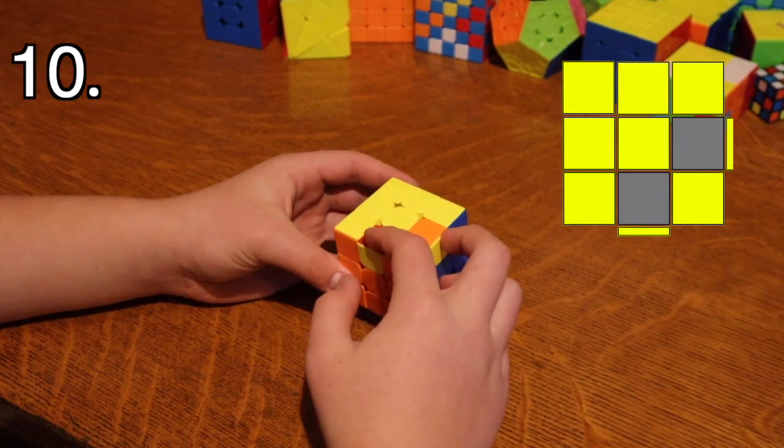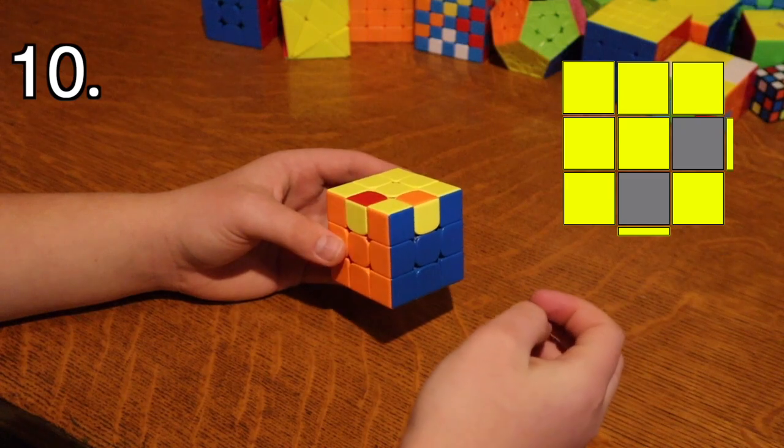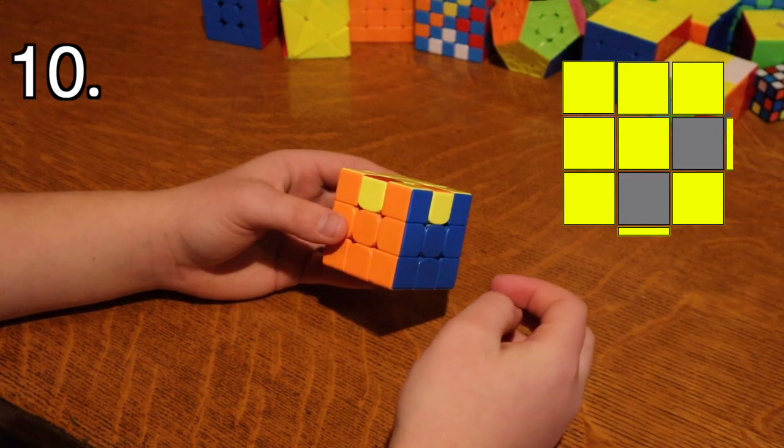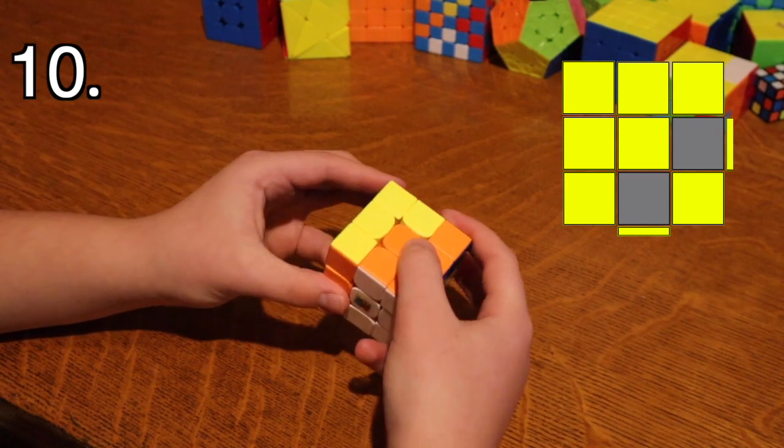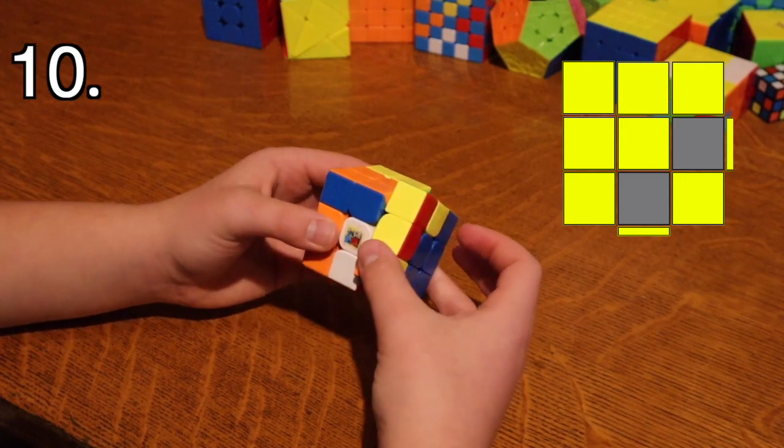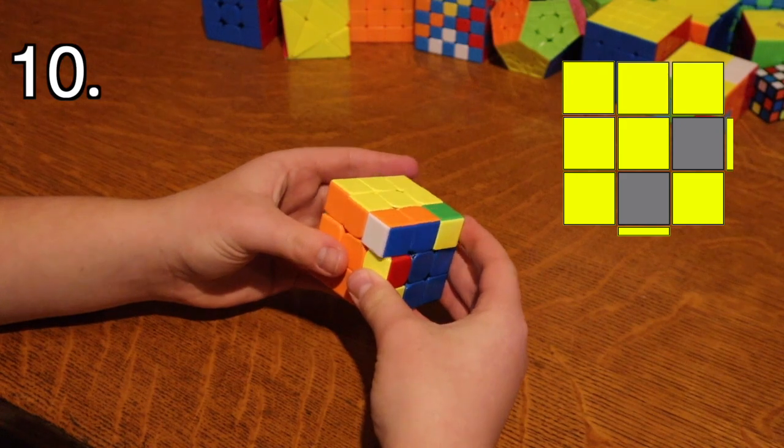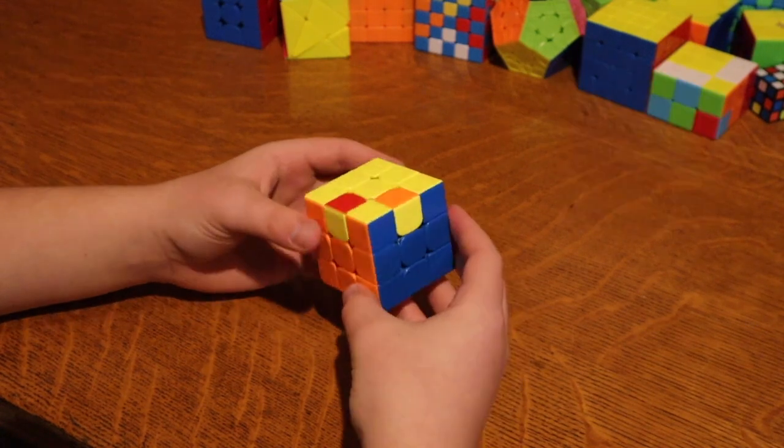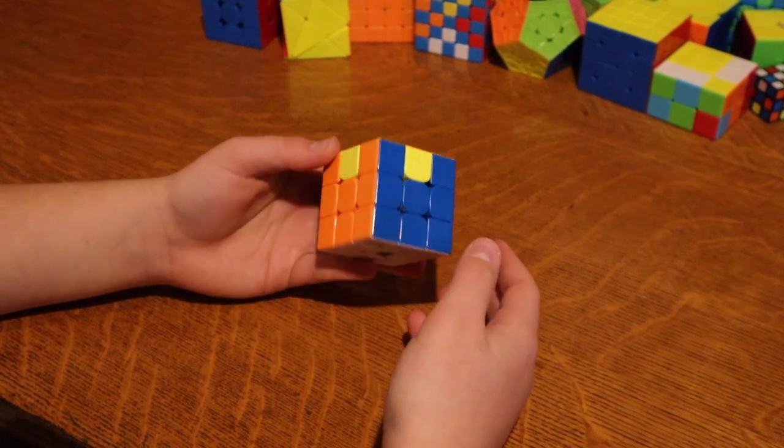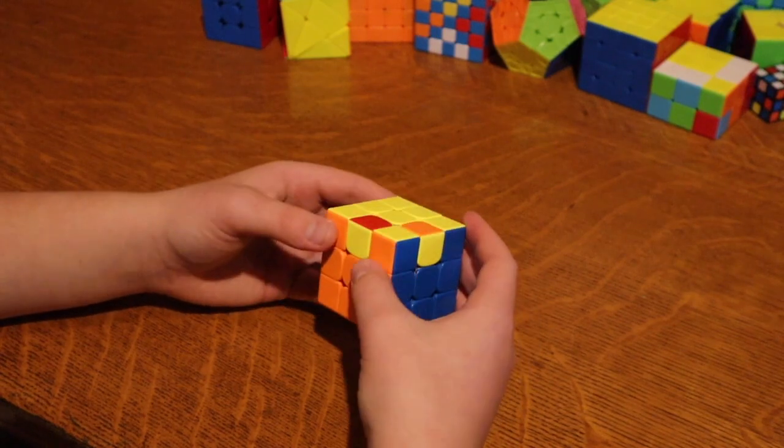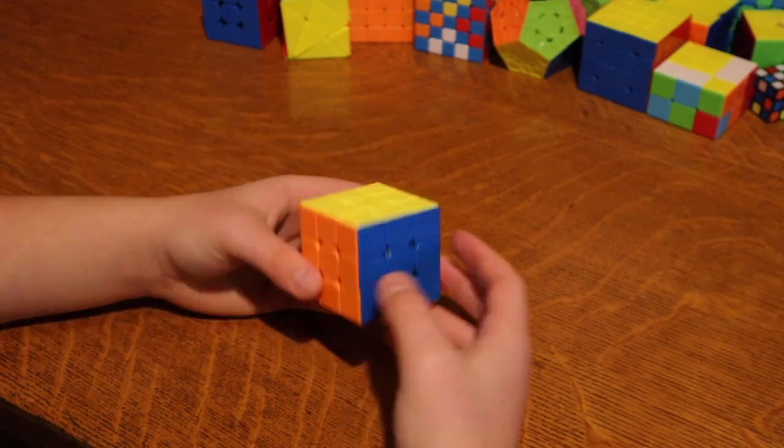And the other case looks like this. It's a little bit less intuitive. It's actually just the same thing, but backwards, but it's kind of harder to do for some reason. But it's just a sexy move with an R wide at the start. And then you do M, and then a reverse sexy move normally. I think the reason it seems harder to me is because of the finger tricks for it. It kind of makes it look harder just by doing it.